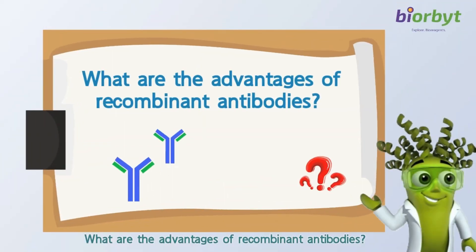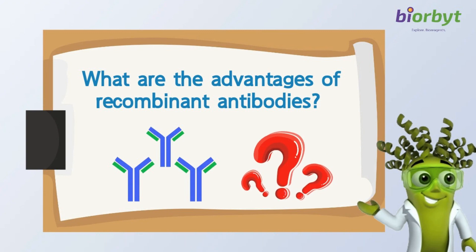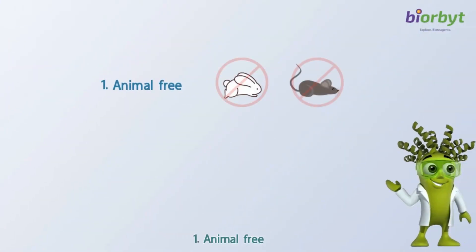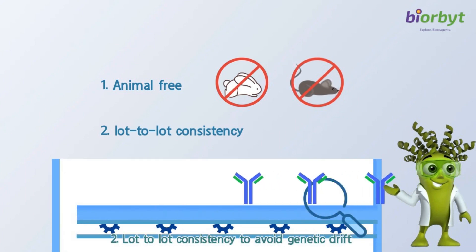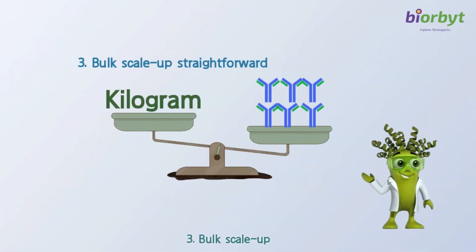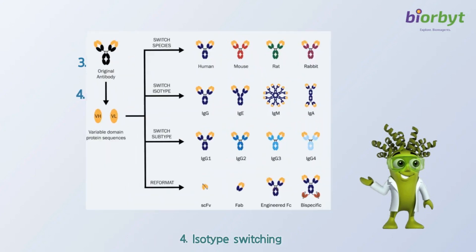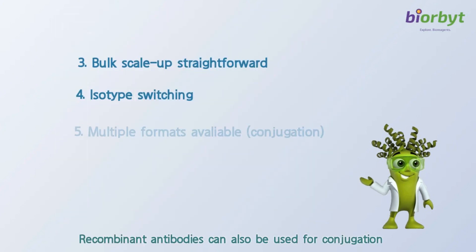What are the advantages of recombinant antibodies? First, animal-free, convenient for international transportation. Second, lot-to-lot consistency to avoid genetic drift. Third, bulk scale-up — you can obtain kilogram-level antibodies. Fourth, isotype switching, such as subtypes, species, and isotype switching.